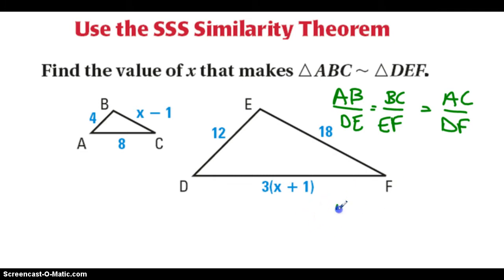Now I can substitute in the values that I know. So AB is 4, DE is 12, BC is x minus 1, EF is 18, AC is 8, and DF, I'm actually going to distribute in my 3 here to make this 3x plus 3.